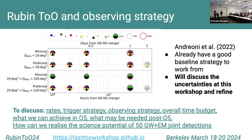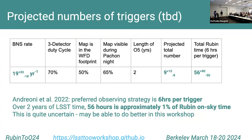We have a lot of uncertainties to discuss. Thanks to Igor, we have a notebook tool where we can simulate the strategies and work together online. We will discuss the uncertainties at this workshop. The projected number of triggers is to be defined. The preferred observation strategy was six hours per trigger, but we are here to discuss this.